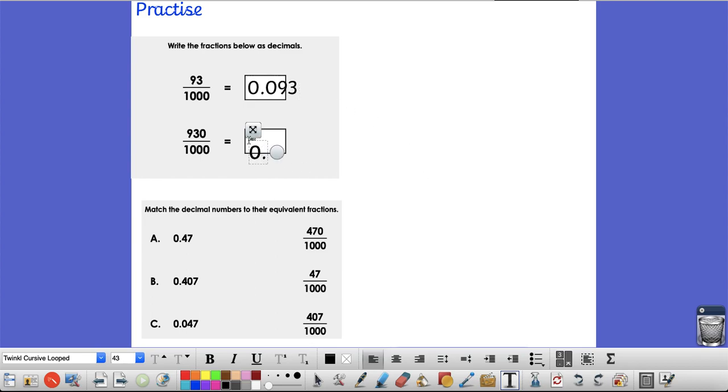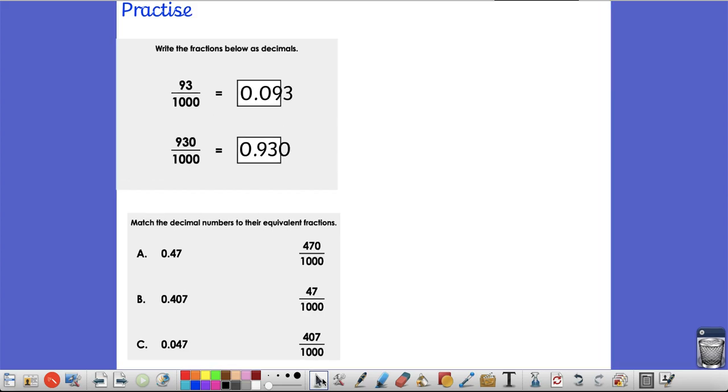In this one, I've got again 0 point. Have I got any tenths this time? Yes, I've got 9 tenths, I've got 3 hundredths and I've got no thousandths. I hope you got those correct.